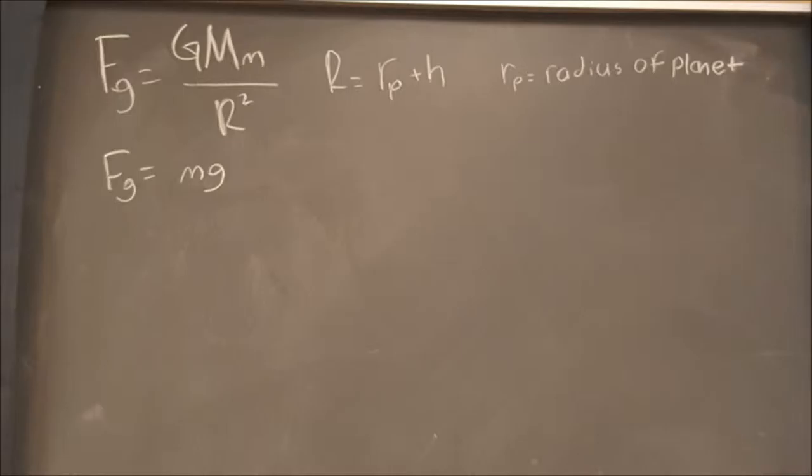G is a constant, big M is the mass of a planet, and little m is the mass of an object. R squared is the radius of a planet.